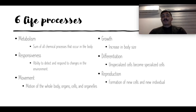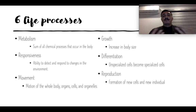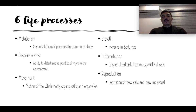Living organisms grow or increase in body size. We also have differentiation — when stem cells that aren't specialized into anything become differentiated to turn into something. So stem cells will turn into skin cells or hair cells. Our cells differentiate into specific jobs or functions depending on what our body needs. And then living organisms reproduce — making new cells or new individuals. Those are the six basic life processes.